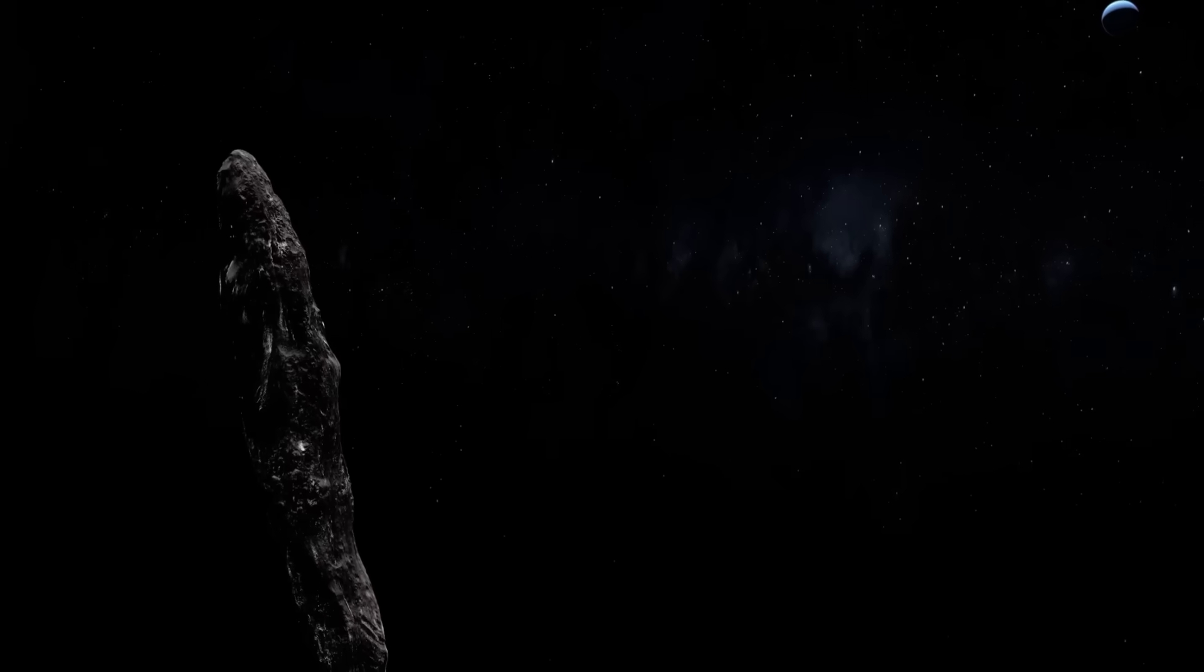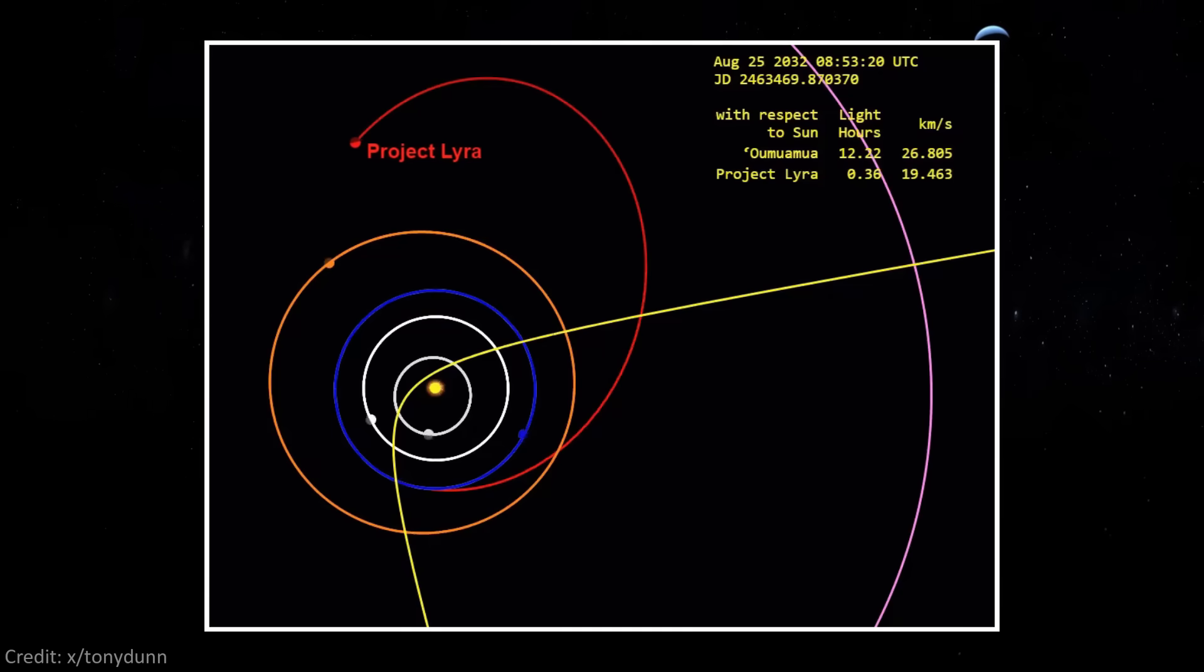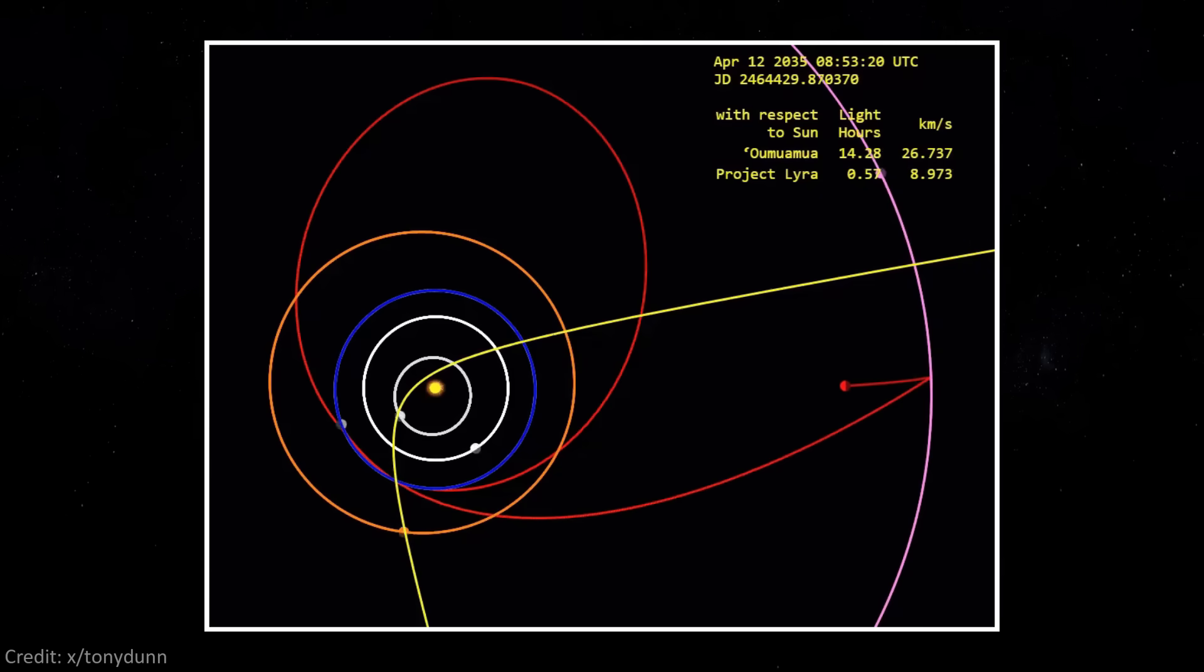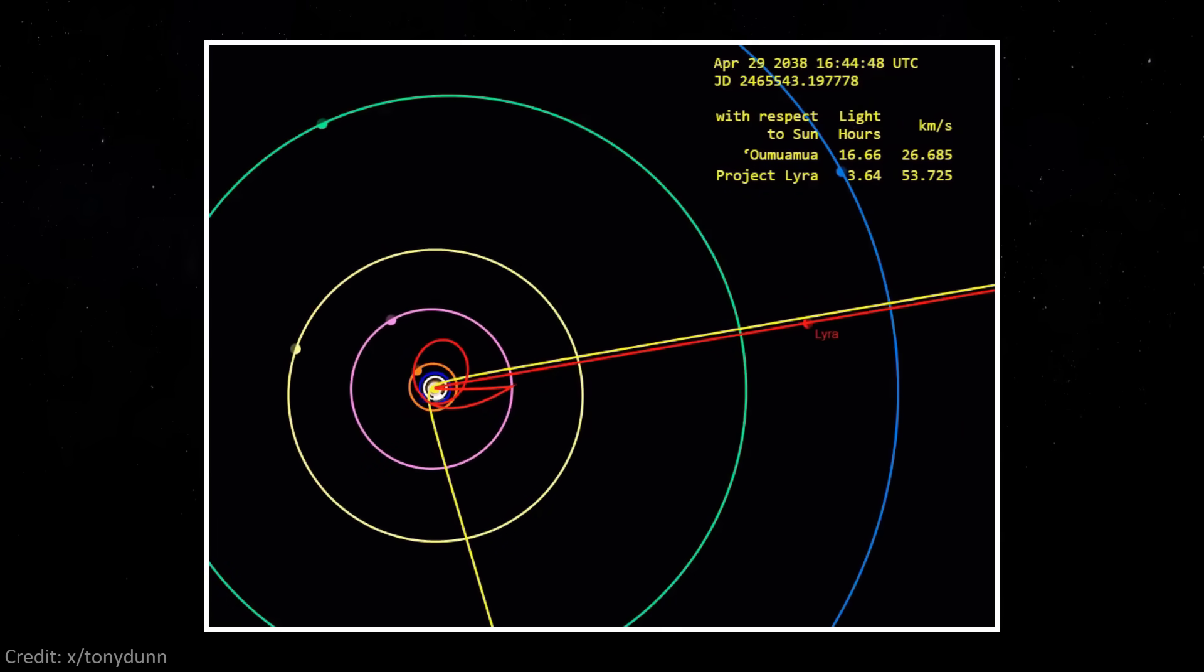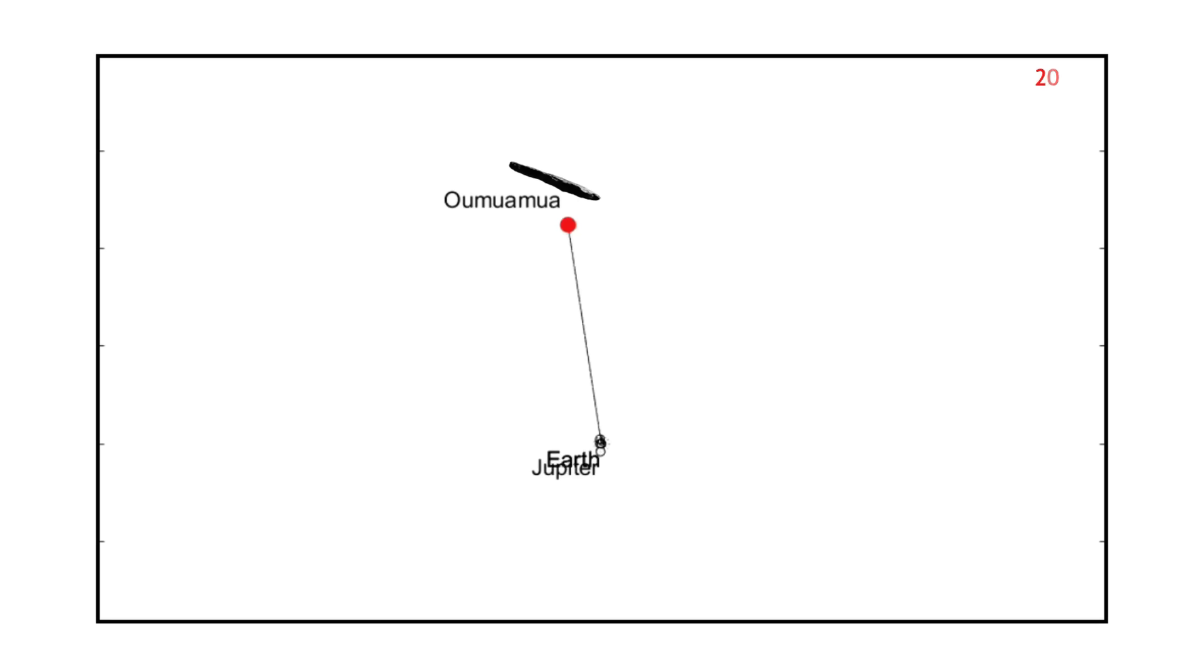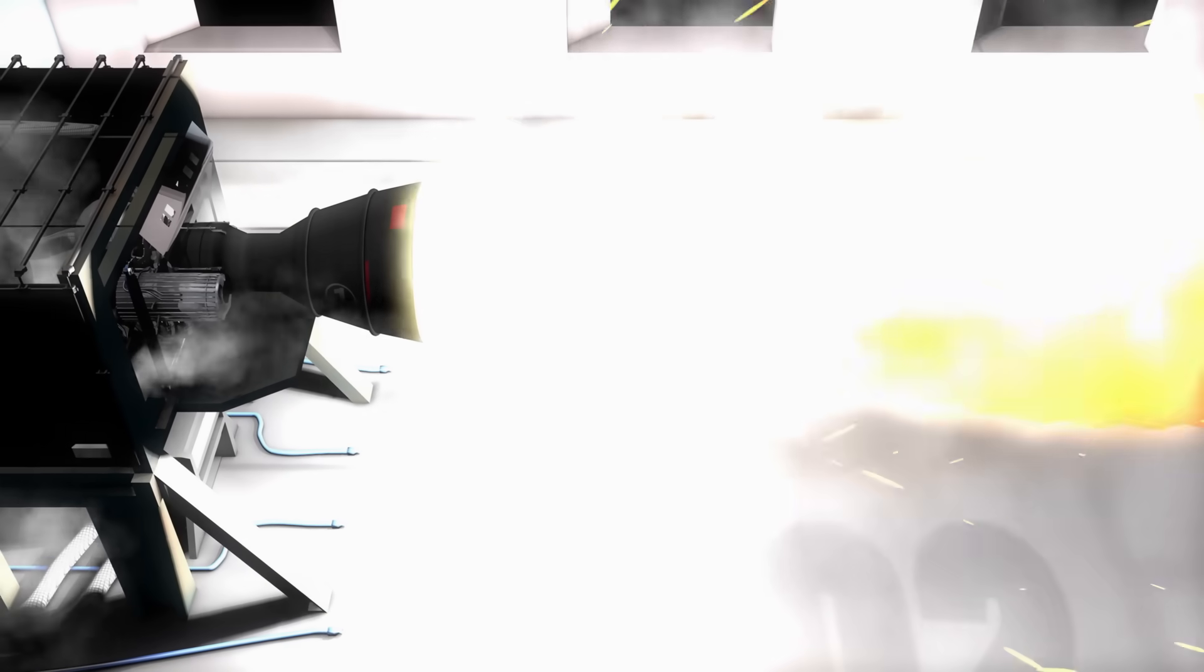So how do we settle this debate? Enter Project Lyra, a blueprint sketched by the Interstellar Probe Working Group. Their vision is to launch a small probe around 2028 aboard a Falcon Heavy or Starship, sling it past Jupiter for a gravity boost, then dip it close to the sun for an Oberth burn, harnessing solar gravity like a slingshot to send it on a 20 to 25 astronomical units per year trajectory. In theory, that craft could catch up, but not until the 2050s, when Oumuamua will be 200 to 250 astronomical units away and fainter than magnitude 35. Pulling off such a mission means mastering heat shields to survive the solar dive and propulsion systems more powerful than anything we've ever flown. It's a long shot, literally.